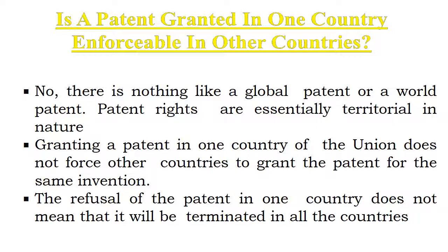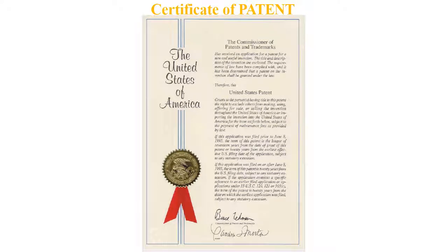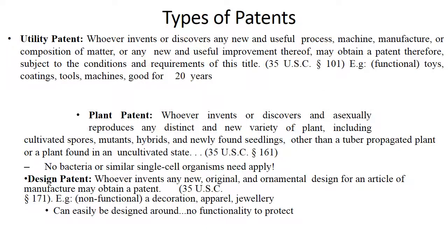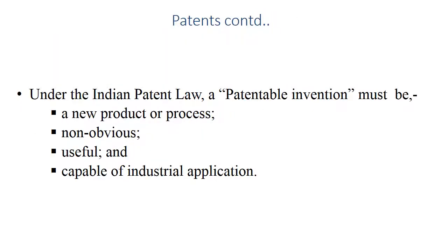A patent granted in one country is not enforceable in other countries. Granting a patent in one country does not force it in other countries, and refusal in one country does not mean it will be terminated in all countries. Types of patents: utility patent, plant patent, and design patent. Utility patents are given for 20 years. For any patent to be valid, it must be a new product or process, non-obvious, useful, and capable of industrial application.